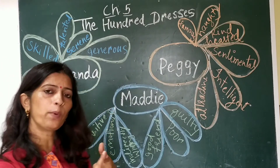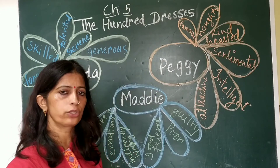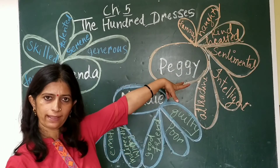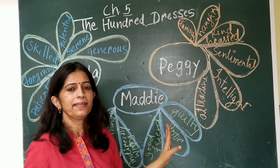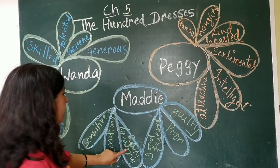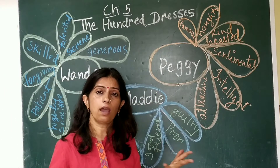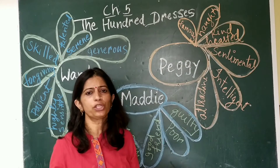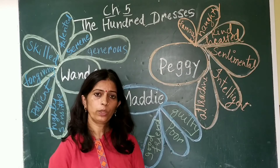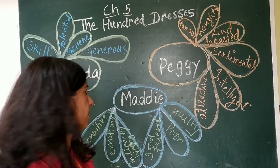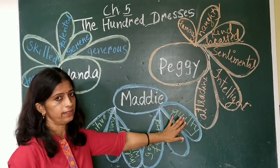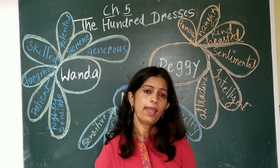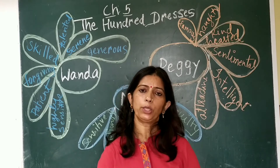So again, both positive and negative qualities come here. She was a good friend because, for friendship's sake, she could do everything. But indirectly, she was involved in the wrong task — she allowed the children to laugh at Wanda, which should not have been done. And she was guilty. After all these things happened, she was feeling guilt for that.